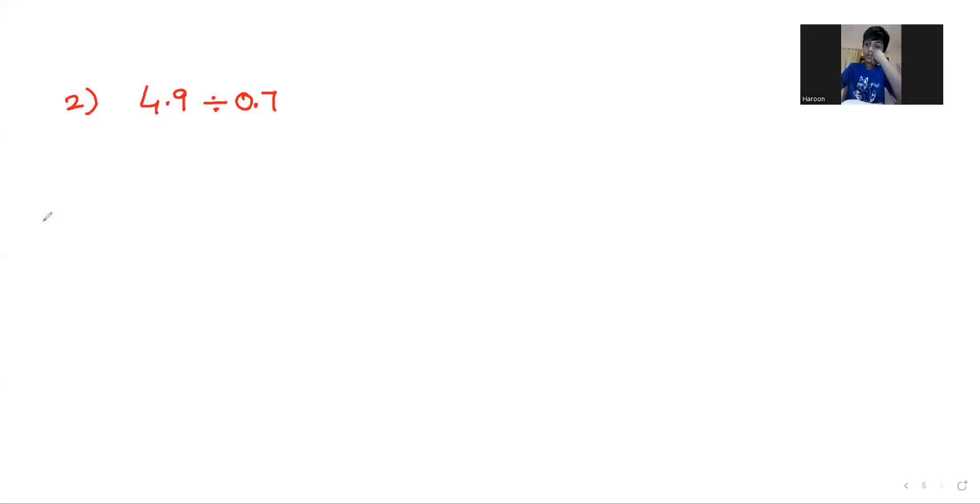4.9 divided by 0.7. First you have to multiply with 10, right? Yes, why we are multiplying with 10? To remove decimal. Two decimals are there, no? With two decimals you can't divide, so to remove decimals we are multiplying with 10.